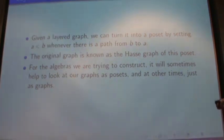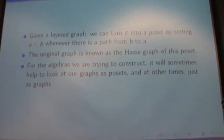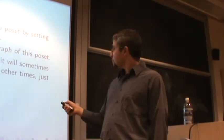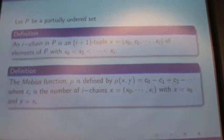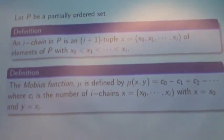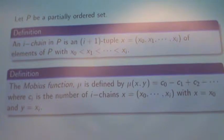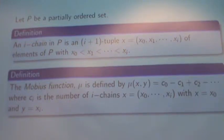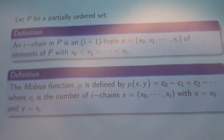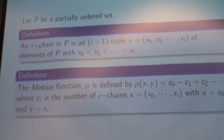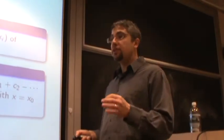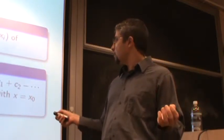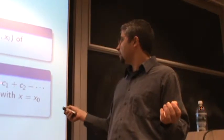We can turn the graph into a Po set by saying A is less than B whenever there's a path from B to A, and then to turn the Po set back into the graph, we just take the Hasse graph of the Po set. One of the reasons we want to look at these as Po sets is we're going to want to take i-chains inside them. An i-chain in a Po set is an i+1 tuple of elements in ascending order. The Möbius function takes in two elements of the Po set and is the alternating sum of the number of chains — we count the number of 0-chains, 1-chains, 2-chains, and do plus, minus, plus, minus down the line.